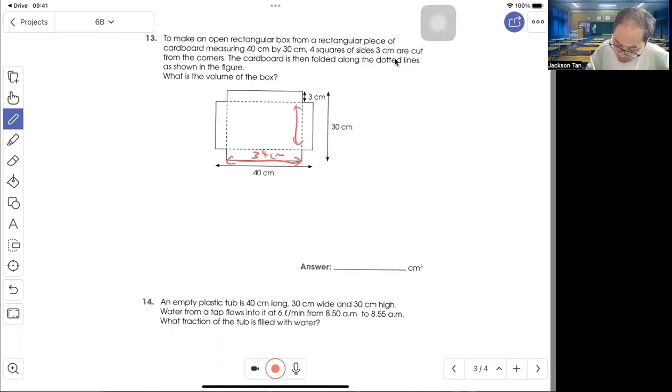30 minus 3 minus 3, that will give you 24 cm, so the height is 3. Length times breadth times height equals 2448 cm³.